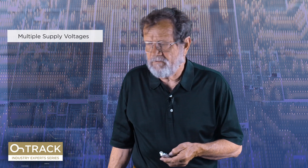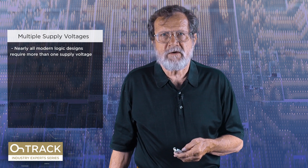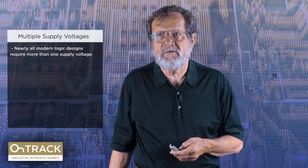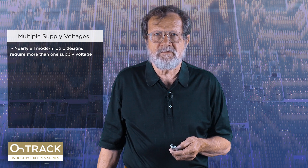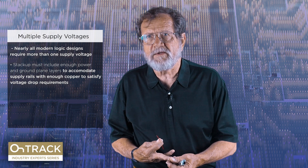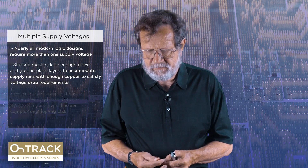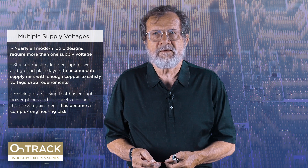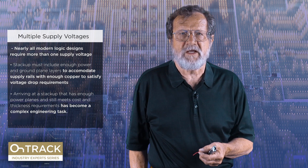That has to be established before you start doing board layout. Modern designs tend to have quite a few voltages — some I've seen as high as 30 voltages required. In the iPhone it's 22, if you can imagine something so small having that many. We're going to have to have enough power and ground planes so we can supply enough copper to deal with the voltage drop associated with the current in each of those rails. We need to make sure there are enough power and ground planes to meet cost and thickness requirements, and it's become a very complex task.